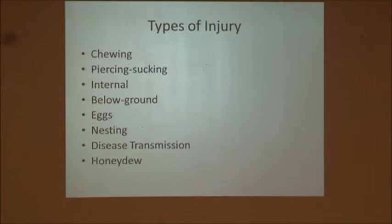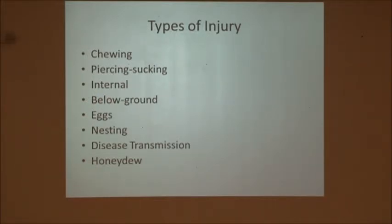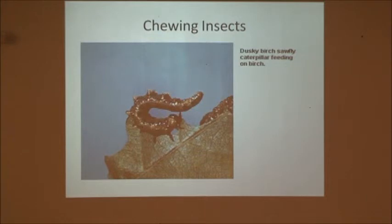There are different types of injury that insect pests can give to your plants, and a lot of that is dependent on their mouth parts. You can have chewing damage, piercing or sucking damage — meaning it has some sort of mouth part that pierces the leaf and sucks out nutrients — internal feeding, below-ground feeding, egg laying, nesting, disease transmission, and honeydew.